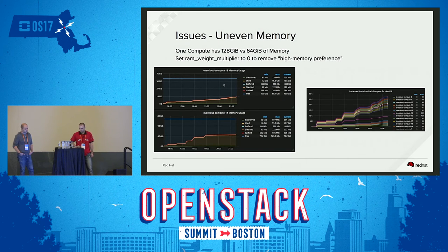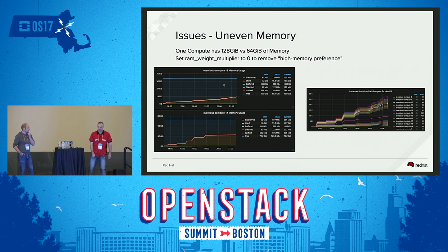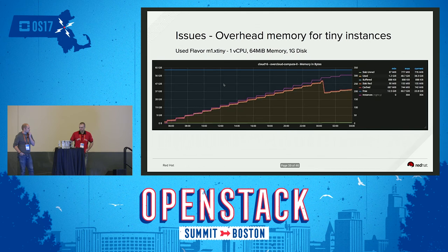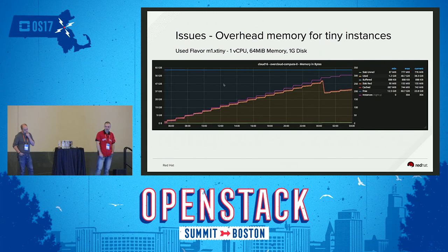Uneven memory was also an issue. One compute had 64 GB of memory and another had 128 GB. Without tuning, Nova's scheduler will produce an uneven distribution — two nodes with 128 GB got clobbered with up to 700 instances versus others having only around 90. Setting the RAM weight multiplier to zero gives a better distribution. I was also using a very small flavor, m1.xtiny, at 64 MB of memory, but overhead memory utilization was following that stepped pattern, and I was worried I wouldn't reach my target instance count.